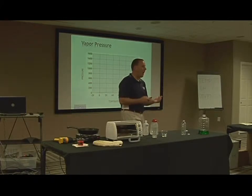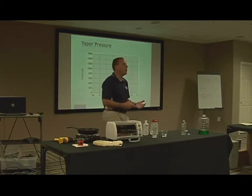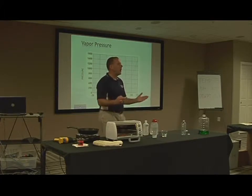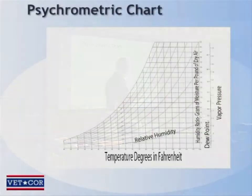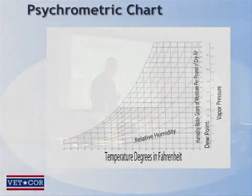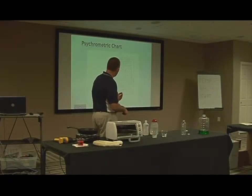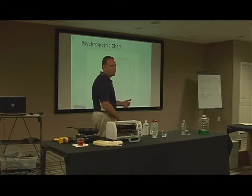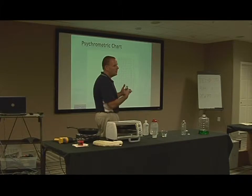And I know some of you are thinking, wow, if only somebody could combine all of these onto maybe one easy-to-read chart. And if you have the handouts, this is full size in the back of your handout — this is the psychrometric chart. This is what the drying industry uses for everything we do. This is the relationship between temperature, relative humidity, absolute humidity, and vapor pressure. This graphically represents the science behind what we do in structural drying.